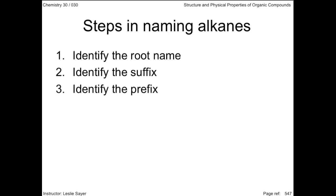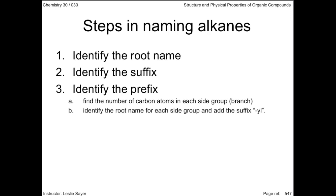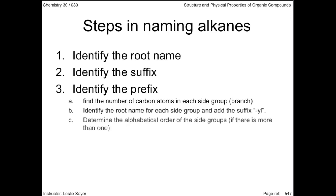Three, identify the prefix. We identify a prefix if the alkane has one or more branches. In identifying the prefix, we find the number of carbon atoms in each side group or branch. We identify the root name for each side group and add the suffix "-yl", like methyl, propyl, butyl, and so on.